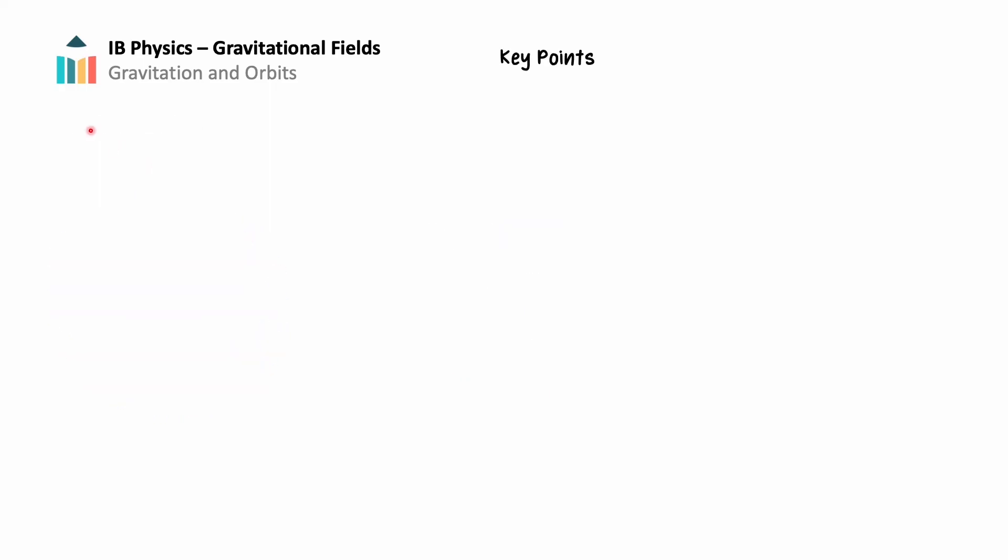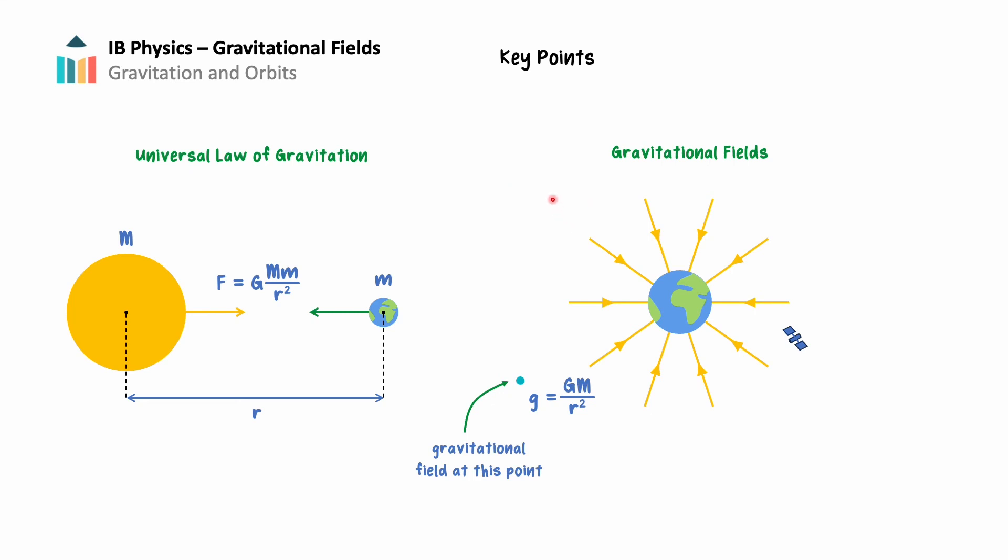Today, we took a journey through the intricate realm of gravitation and orbits. From unraveling the Universal Law of Gravitation, the gravitational force that governs celestial bodies, to exploring the concept of gravitational fields that extend their influence through space, we've gained insight into the forces shaping the cosmos. We've explored the mechanics behind gravity and the captivating movement of celestial bodies in our vast universe. Thanks for watching.